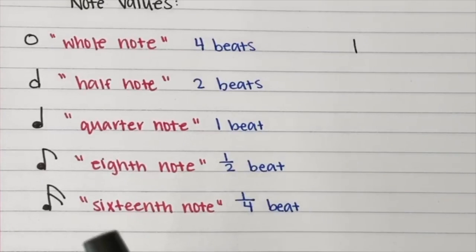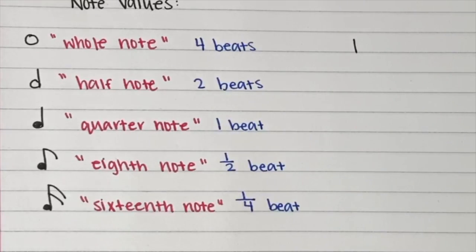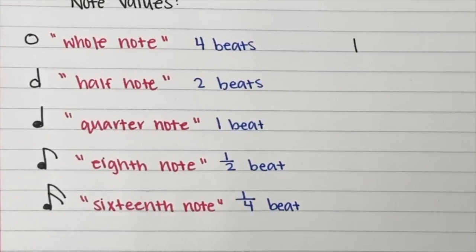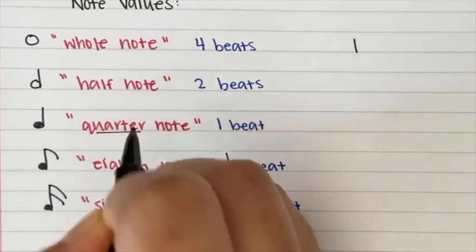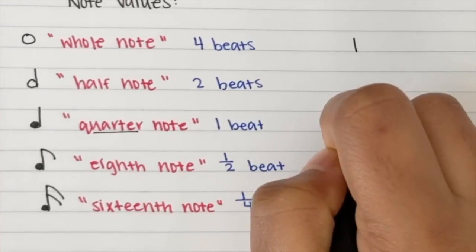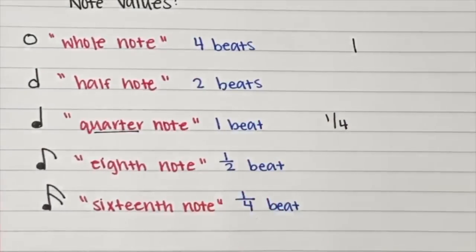So we're going to start from a quarter note. A quarter note is the most basic note. It's equal to one beat. So as you can tell from the title, it's one quarter of a whole note, which is one.